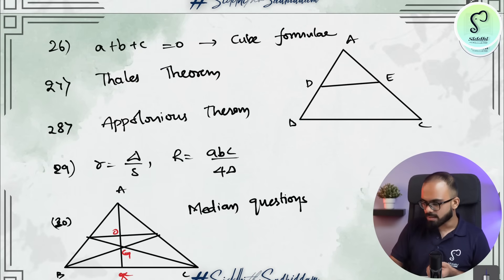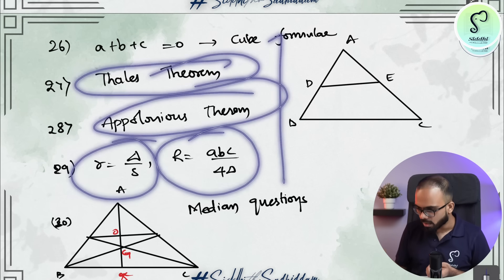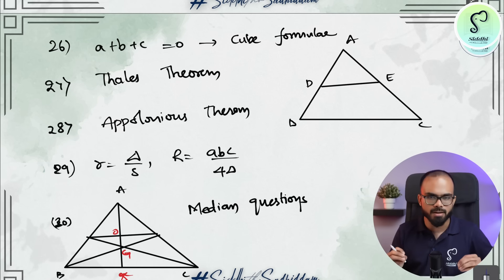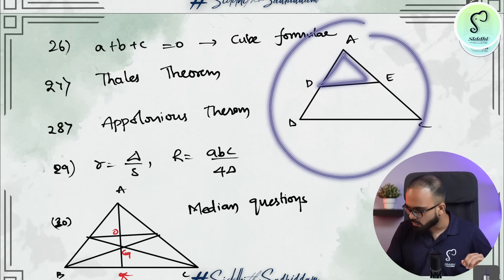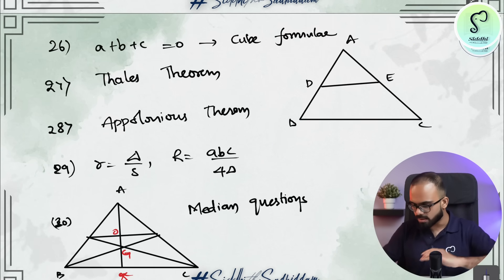Then triangles. In triangles, Thales theorem, Apollonius theorem and R equal to delta by S, R equal to ABC by 4 delta. These are important. And there is one more application of Thales theorem that is midpoint theorem. In midpoint theorem, they will ask you the ratio of areas of triangle ADC to ABC or ADE triangle to DEBC trapezium. So those questions.